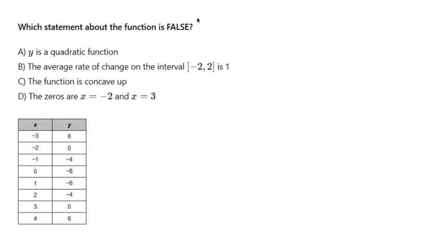Which statement about the function is false? I want a false statement. Well, let's see what we got here. Y is a quadratic function — the x's go up by 1's every single time, so that's equal length input value intervals. I have to first find out if it's quadratic, and see if it's linear.